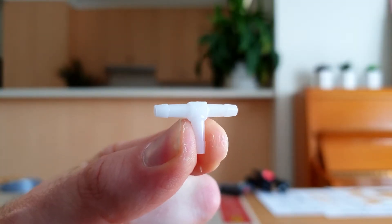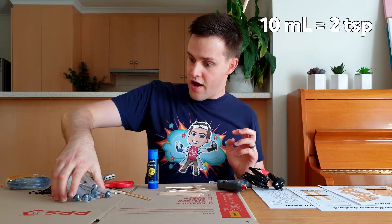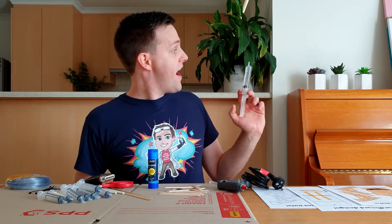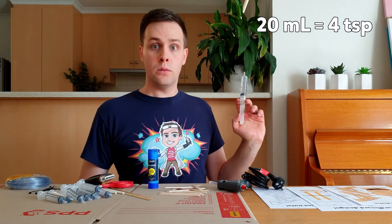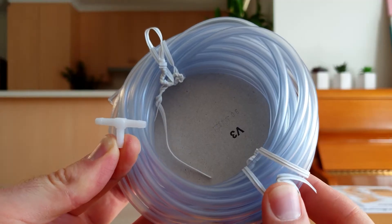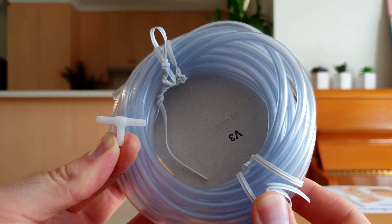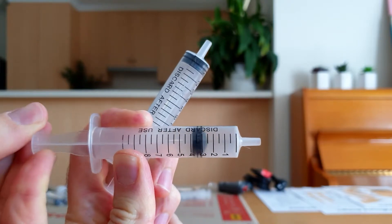A 3mm T-piece connector, 8 10ml plastic syringes, and a 20ml plastic syringe. You can find this tubing and connector in the irrigation aisle of most hardware stores, and these syringes at some chemists.